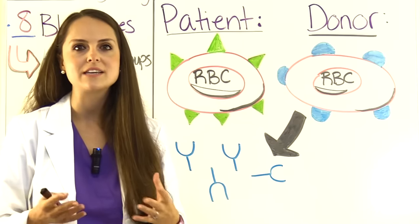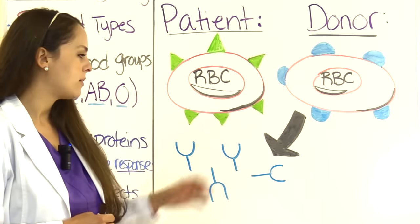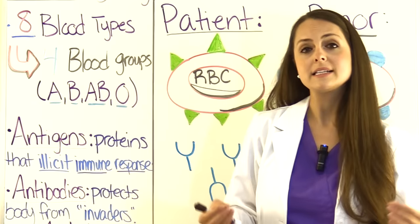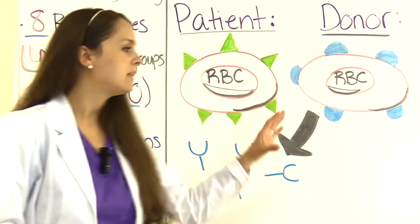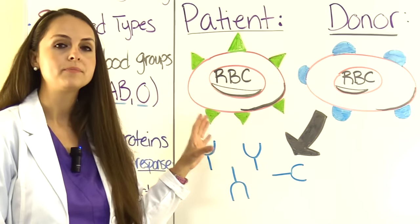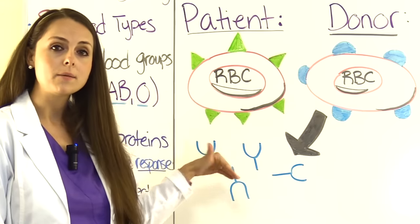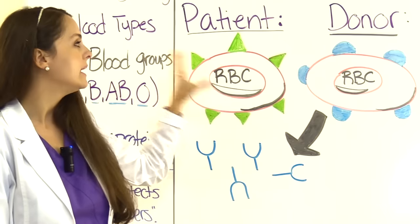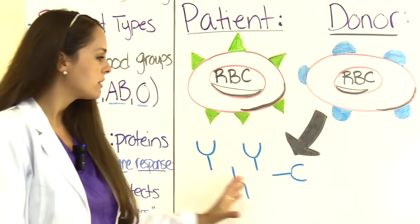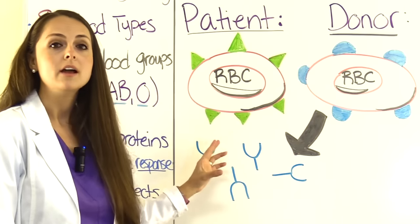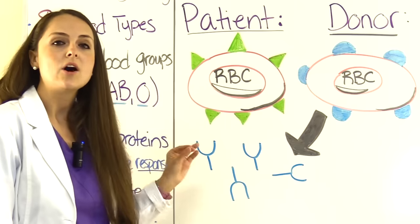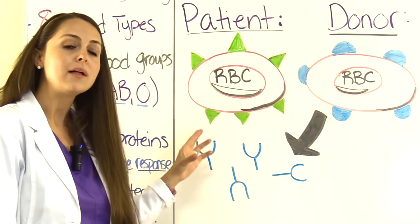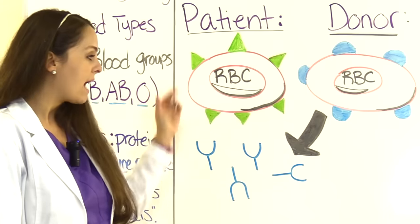Now let's talk about antibodies. Antibodies protect our body from invaders, and in this context we're talking about what's found in the plasma surrounding the red blood cell. The antibodies are always going to be the opposite of what type of antigen is found on the red blood cell. So if we have type A blood with A antigens, the antibodies floating in the plasma will be type B — because we don't want the same antigen and antibody getting together, as that would cause the red blood cell to die.